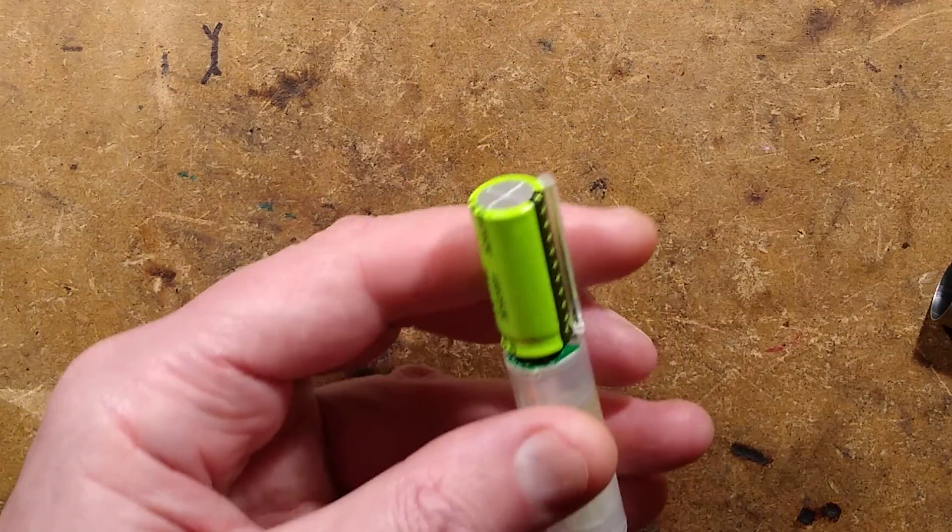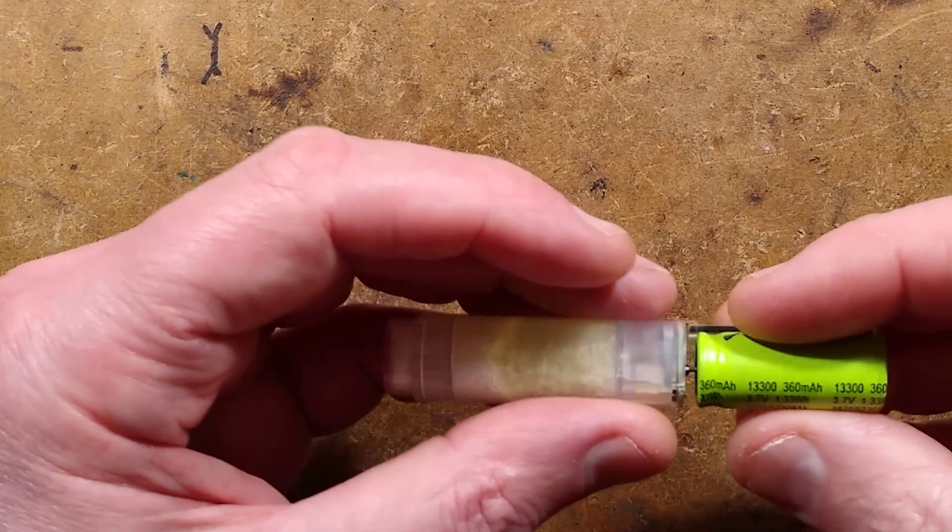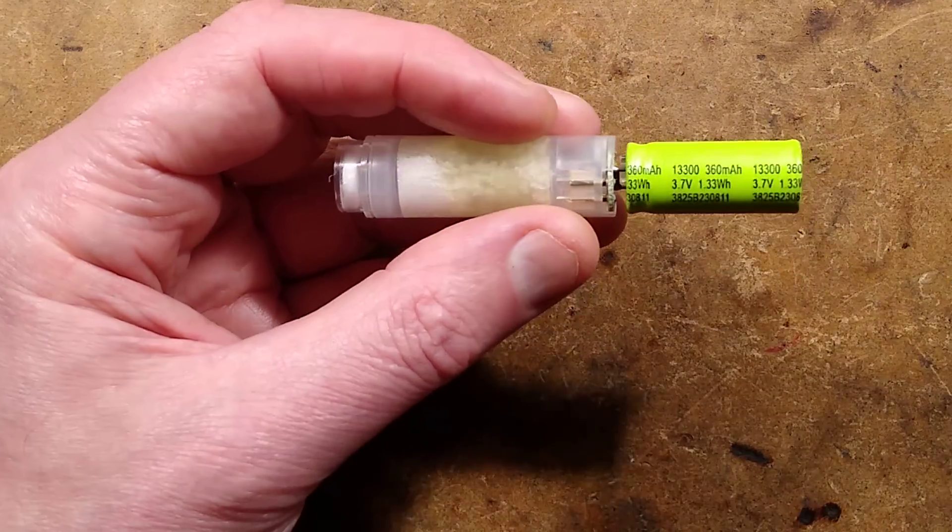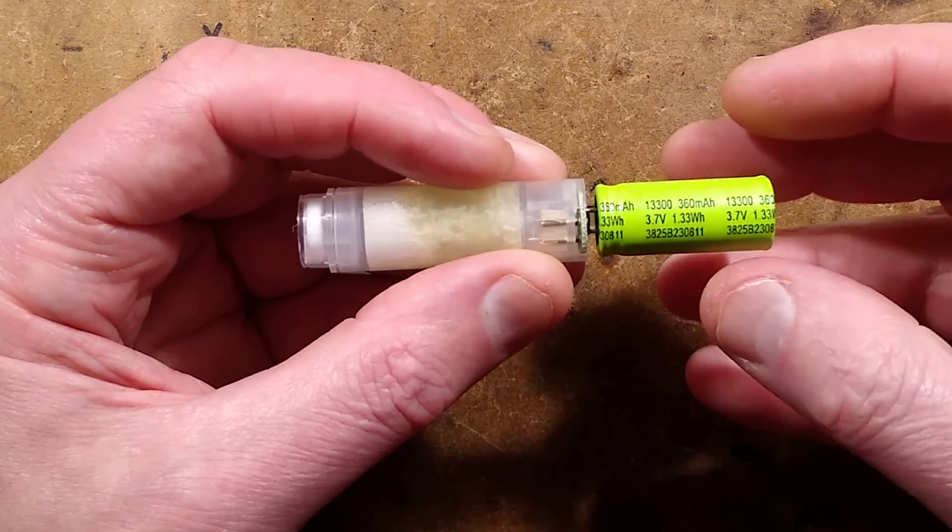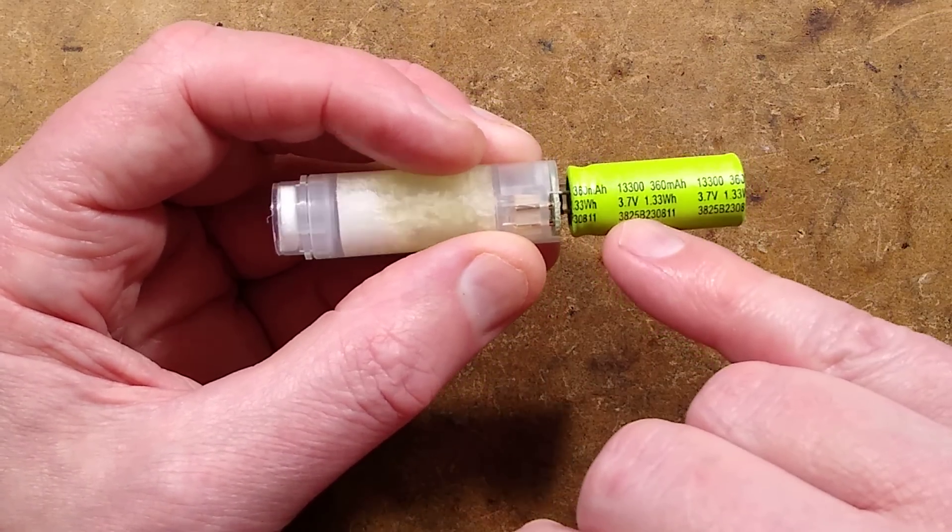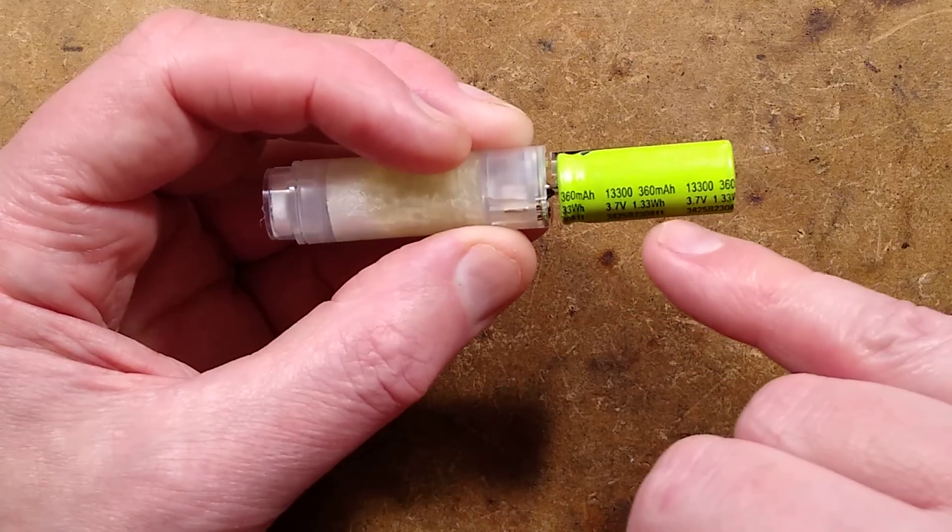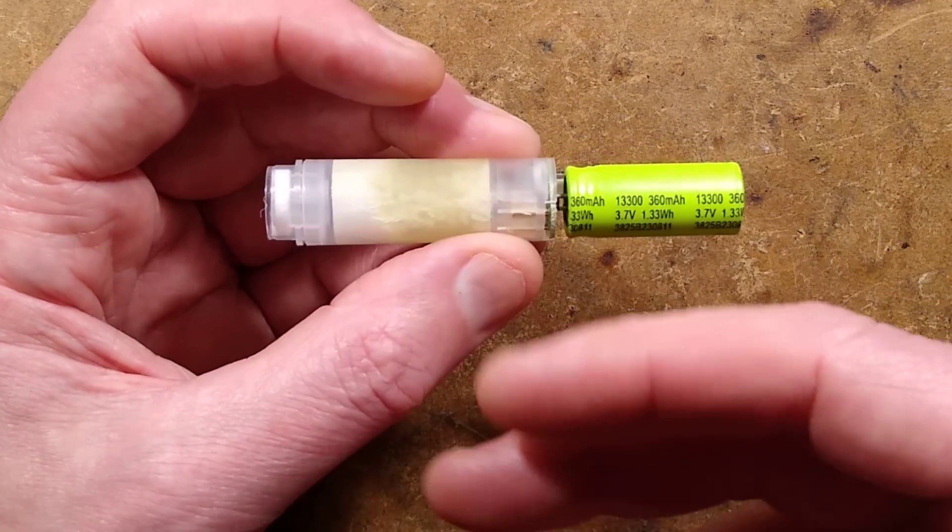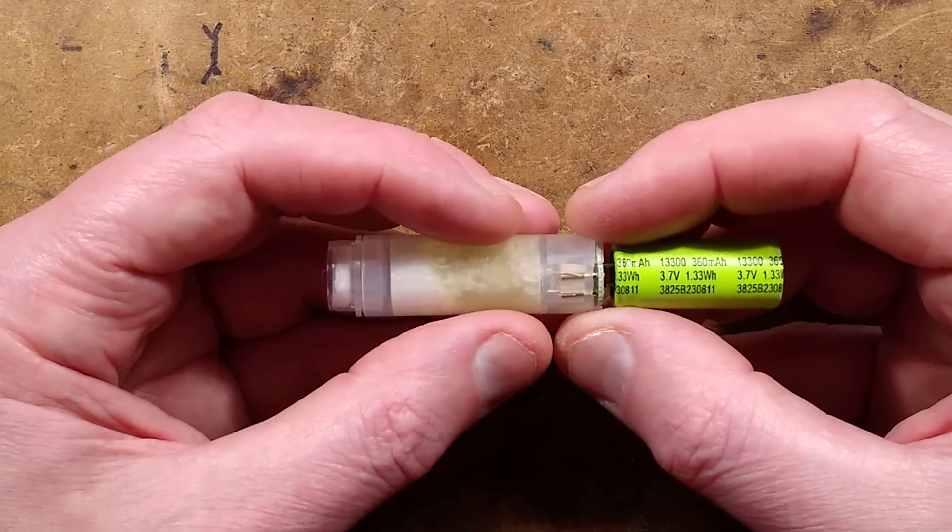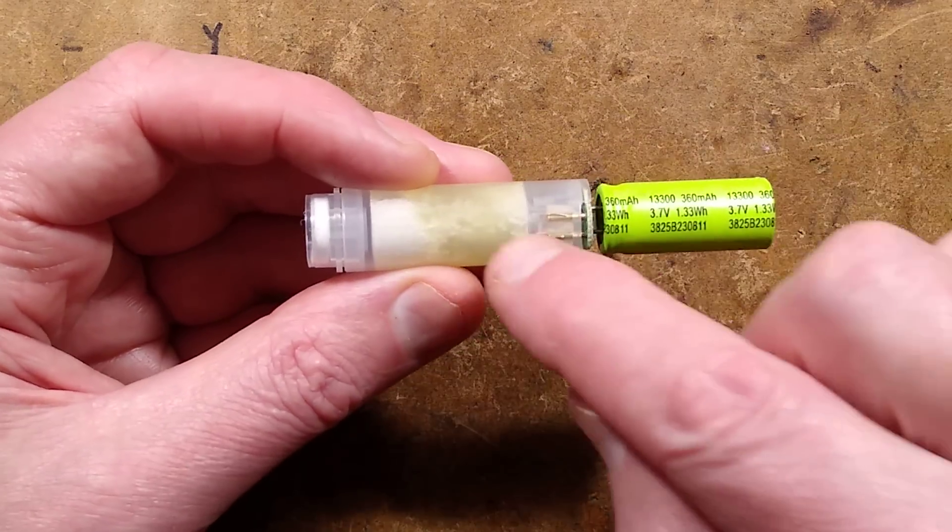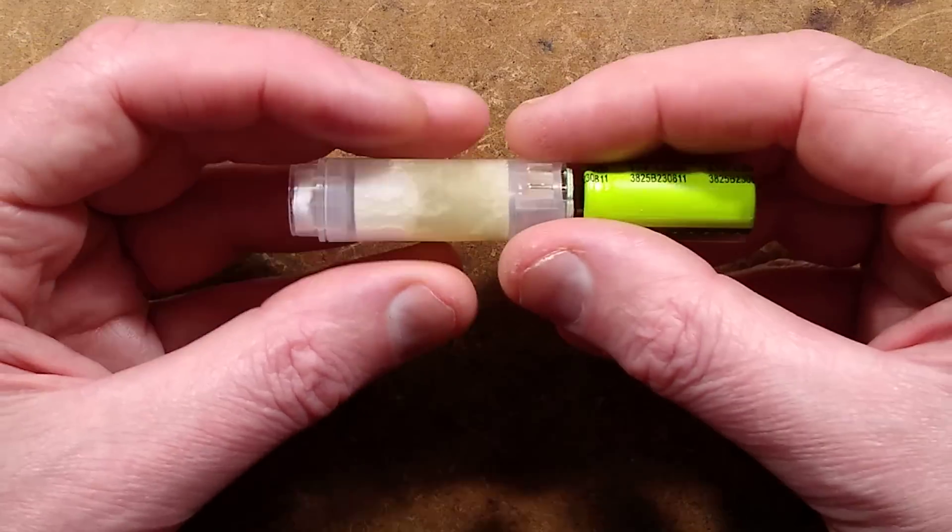The lithium cell has higher energy density and is marked 3.7V, which indicates standard lithium ion, and 360 milliamp hour, which seems very common for these. They used to be 500 milliamp hour but they've cut things down, presumably cut the liquid down as well.